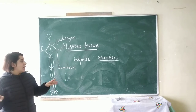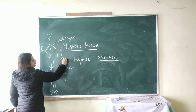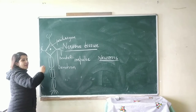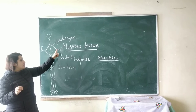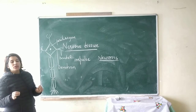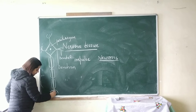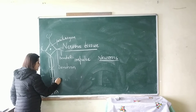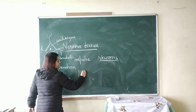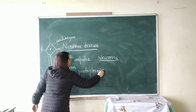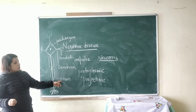Thread-like structures arise from the pericaryon and are called dendrons. The dendrons further branch into dendrites. One of the thread-like projections is very long and it is known as the axon. The dendrites, dendrons, and axons are all protoplasmic projections.